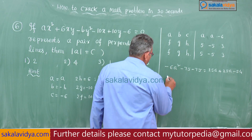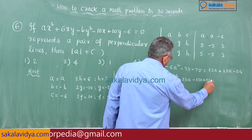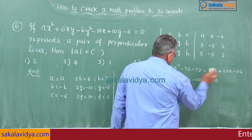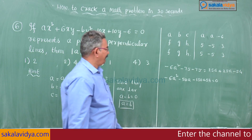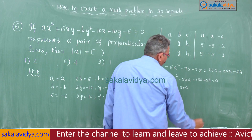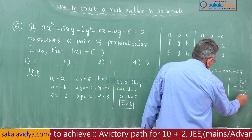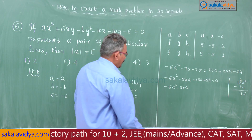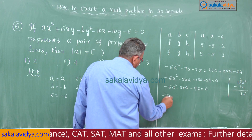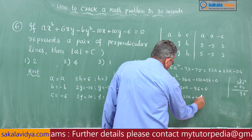Simplifying: -6A² - 50A + 25A + 25A - 54 - 96 = 0. Taking -2 common: 3A² + 25A + 48 = 0.